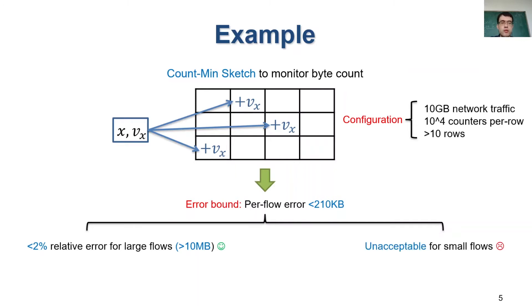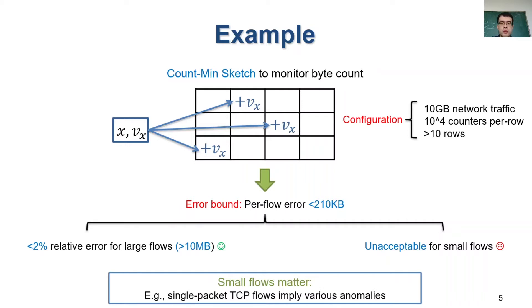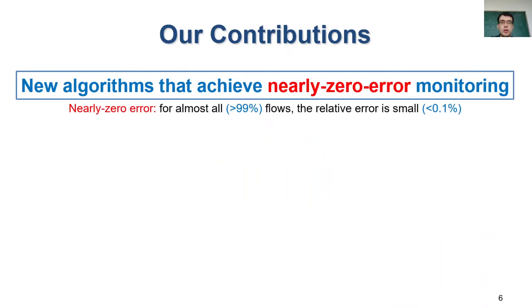However, for small flows, the error bound is too loose and unacceptable. Even though current monitoring focuses on large flows, the small flows are also important because they imply many anomalies. And if we can accurately monitor such very small flows, network administrators can quickly deal with the anomalies. So in this paper, we want to design new algorithms that can achieve nearly zero error monitoring.